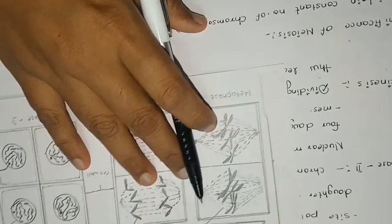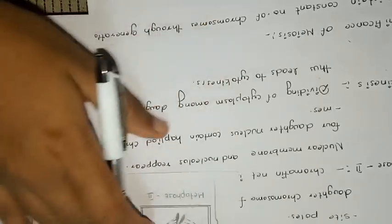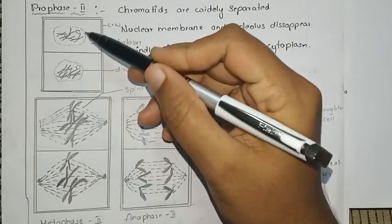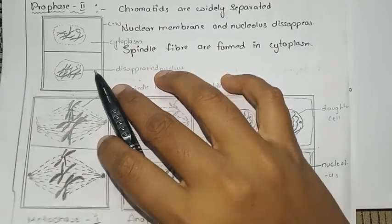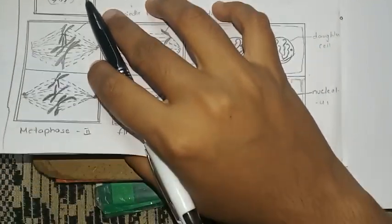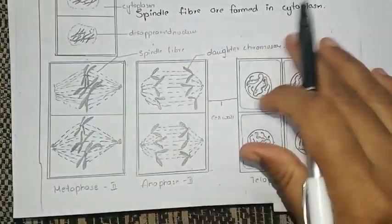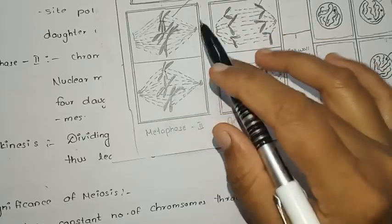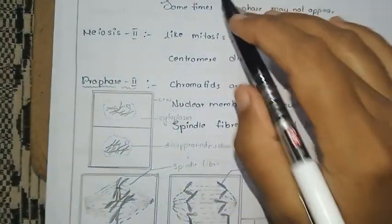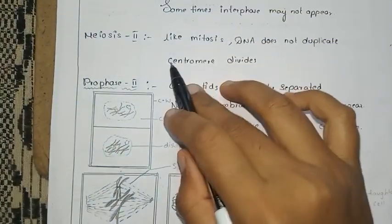In Telophase 1, there is a mitotic-like division. We now have only two chromosomes per cell. Our chromosomes have been reduced to half. This completes Meiosis 1.